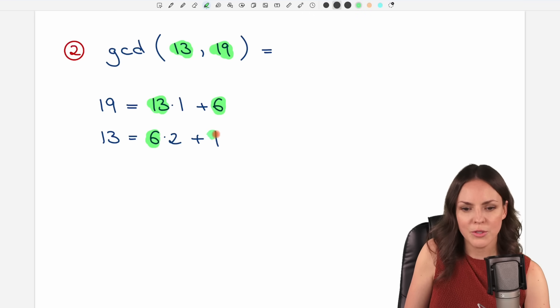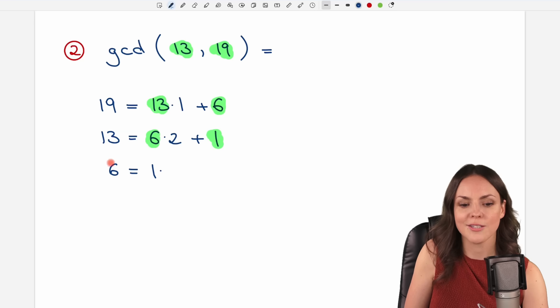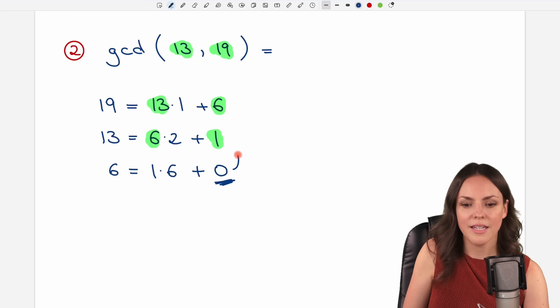Okay, new numbers. We do the same thing. 6 equals how often does the 1 go into the 6? Well, the 1 goes into the 6, 6 times. And 1 times 6 equals 6 already. So we don't have any remainder. So the remainder is 0. We arrived at the end. And we then automatically know that our previous remainder is our greatest common divisor. So it is a 1.